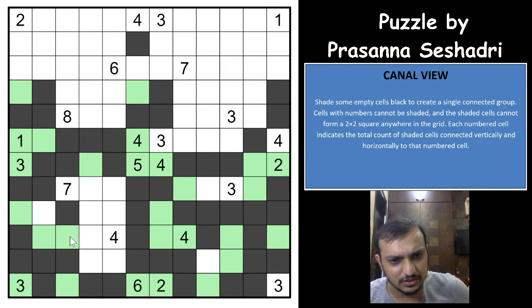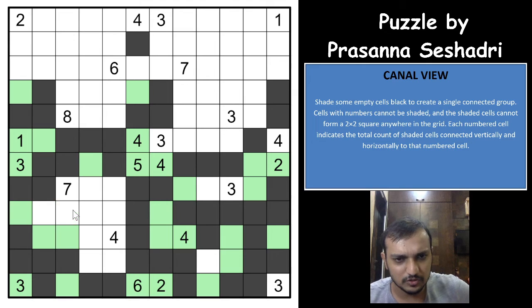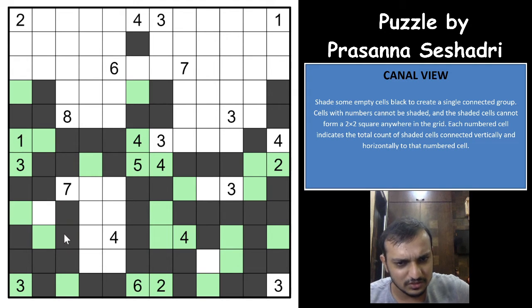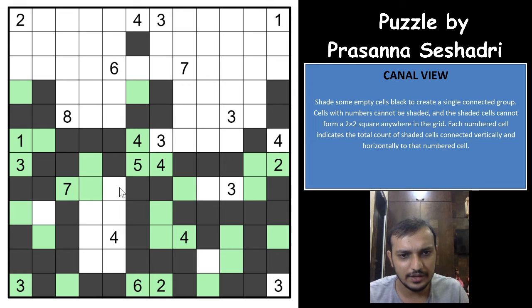If this cell is not shaded: 1, 2, 3, 4, 5, 6 and 7 — not possible. So this cell and this cell would have to be shaded, and 7 is fulfilled.